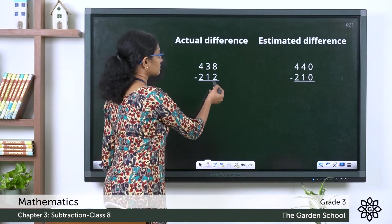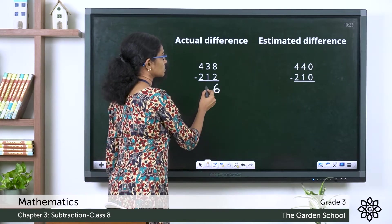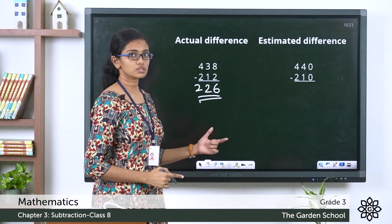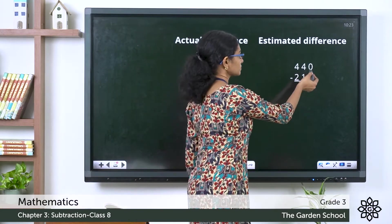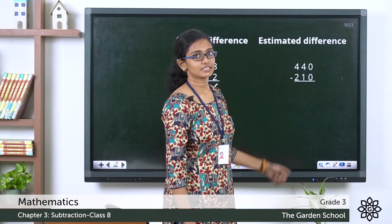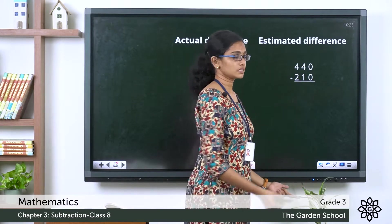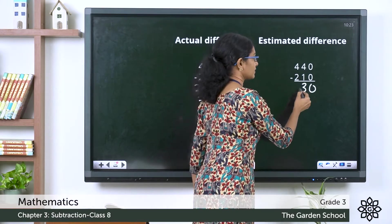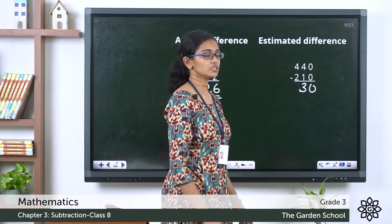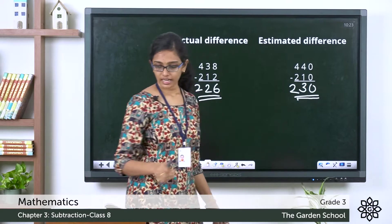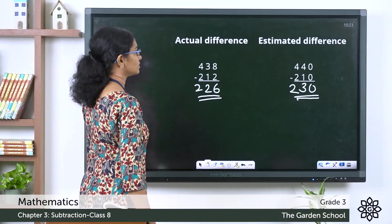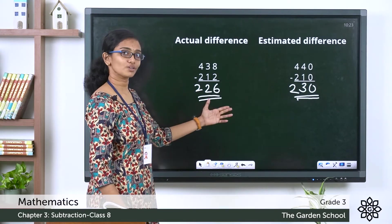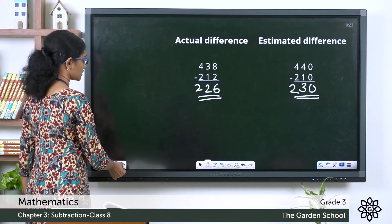Let's find the actual difference first: 8 minus 2 is 6, 3 minus 1 is 2, 4 minus 2 is 2 — so the actual difference is 226. Now for the estimated difference using the rounded values: 0 minus 0 is 0, 4 minus 1 is 3, 4 minus 2 is 2 — giving an estimated difference of 230. The estimated difference is close to but slightly more than the actual difference.